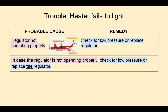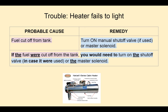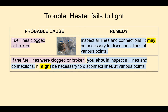Here we have another example. In case the regulator is not operating properly, check for low pressure or replace the regulator. Or, if the fuel were cut off from the tank, you would need to turn on the shut-off valve, in case it were used, or the master solenoid. Finally, if the fuel lines were clogged or broken, you should inspect all lines and connections. It might be necessary to disconnect lines at various points. Note 'may' and 'might' in yellow, since this will be explained later.